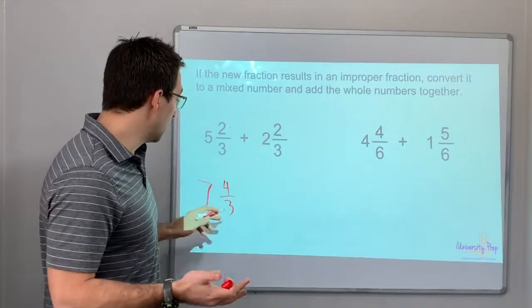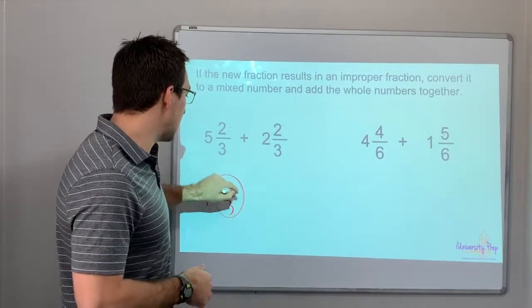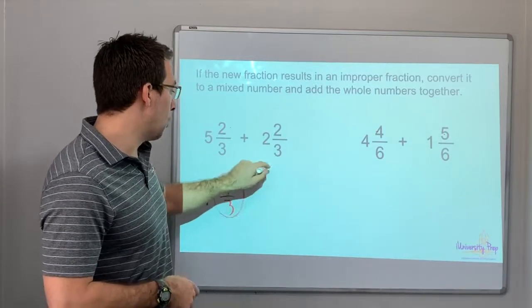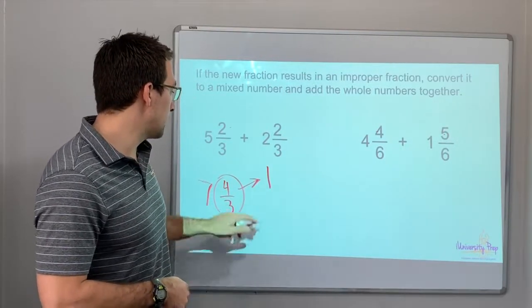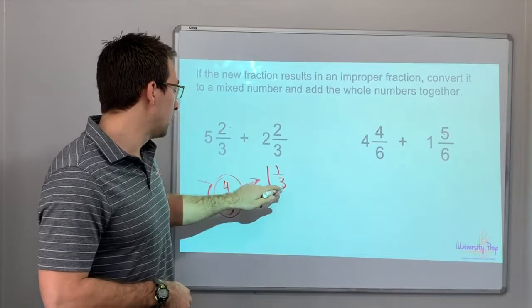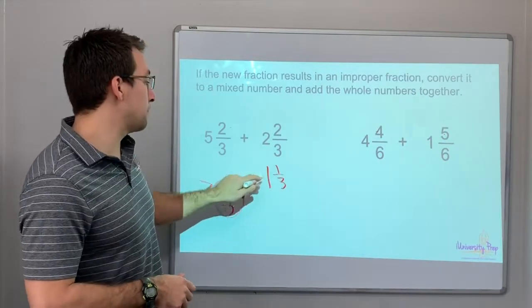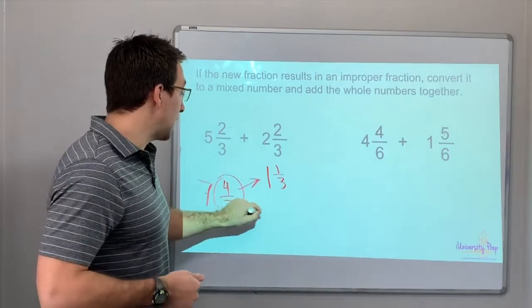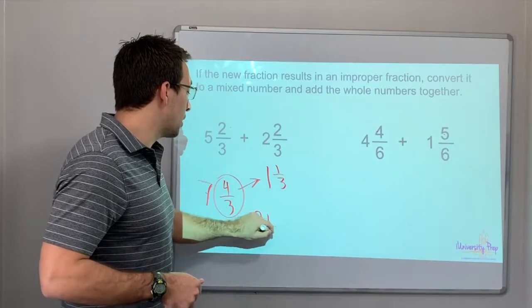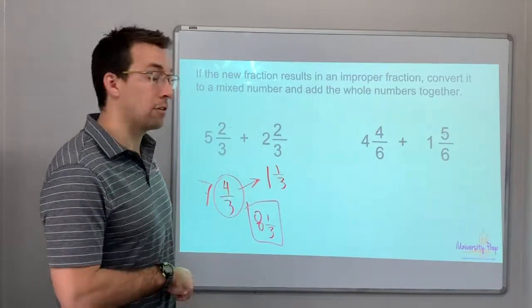What do we do? So 4/3 - 4 divided by 3 is 1 and 1/3. So now I'm adding 7 plus 1 and 1/3. 8 and 1/3 is my final answer.